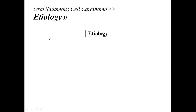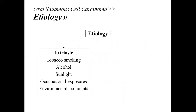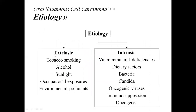Moving on to etiology, we have two types: extrinsic and intrinsic. For extrinsic, we have tobacco smoking, alcohol, sunlight, occupational exposures, and environmental pollutants. For example, those working in salons are at higher risk because the sprays used contain chemicals that can cause OSCC. Also, miners working with asbestos are at risk. Environmental pollutants can also lead to various diseases including oral squamous cell carcinoma.